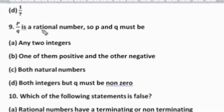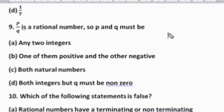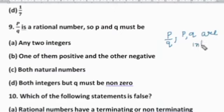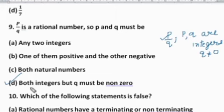Question 9: P/Q is a rational number, so P and Q must be — Option A: any two integers, Option B: one positive and the other negative, Option C: both natural numbers, Option D: both integers but Q must not be zero. The definition of rational numbers is: they can be written in the form P/Q where P and Q are integers, but Q (the denominator) must not be zero. Option D satisfies this complete definition, so the right answer is Option D.